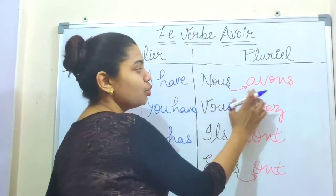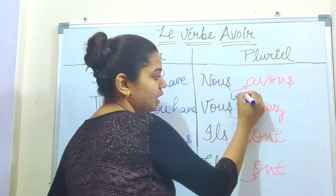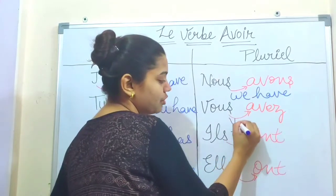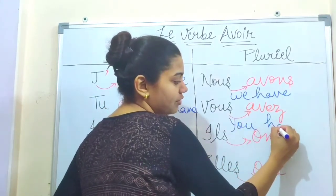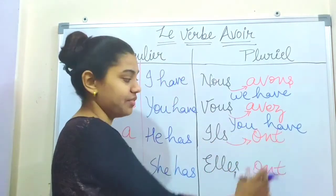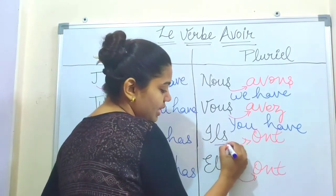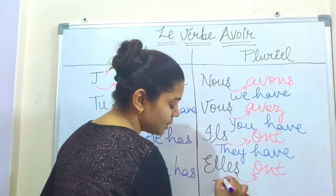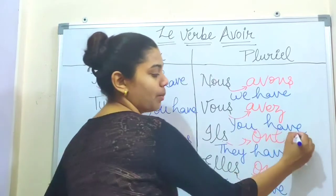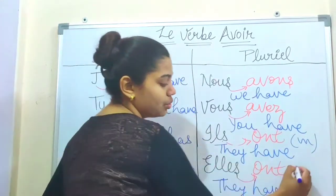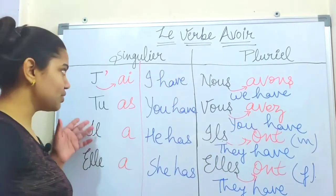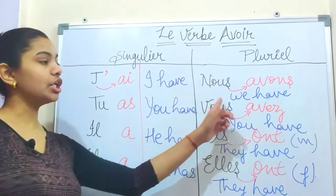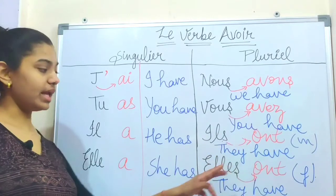Nous avons means 'we have.' Vous avez means 'you have' — used formally. Ils ont means 'they have' for a masculine group, and elles ont means 'they have' for a feminine group. Let's repeat once: j'ai, tu as, il a, elle a, nous avons, vous avez, ils ont, elles ont.